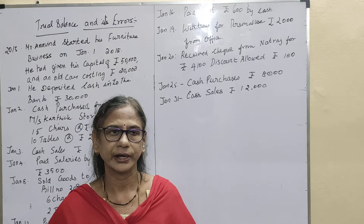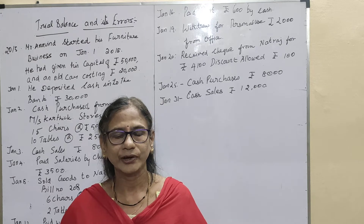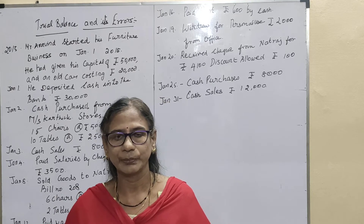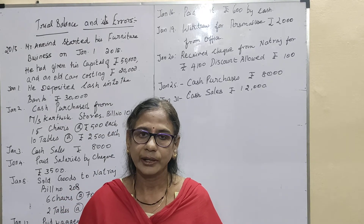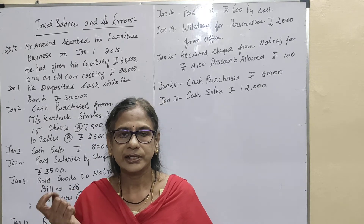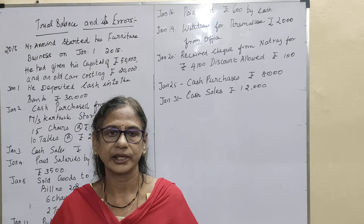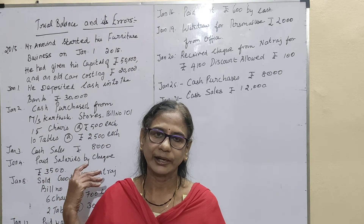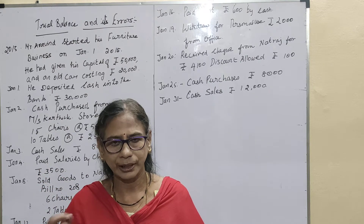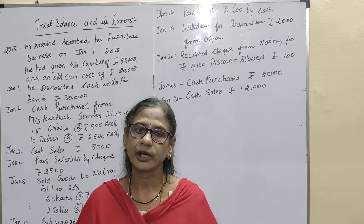For example, instead of writing three thousand two hundred, they may write three thousand only. Errors may be on the credit side, the debit side — entering on the wrong side, entering the wrong amount (instead of three thousand one hundred they may enter three thousand), errors in the wrong side, errors in the wrong account, errors in the wrong amount. These are the three major errors we find in preparing ledger accounts and journal entries.